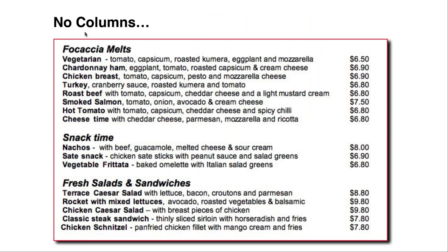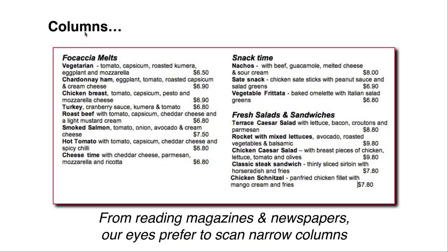Here we've got a typical casual cafe menu with no columns. Notice the density of all that text. It's well described — we've got all the wording in there, and it's actually quite important to include all the ingredients these days because people will come back and say you didn't tell me there was mayonnaise in it, or I'm allergic to chili. But being that dense is actually quite unreadable. People get tired and bored reading through it all and just stop. So I believe it's more important to have two columns.